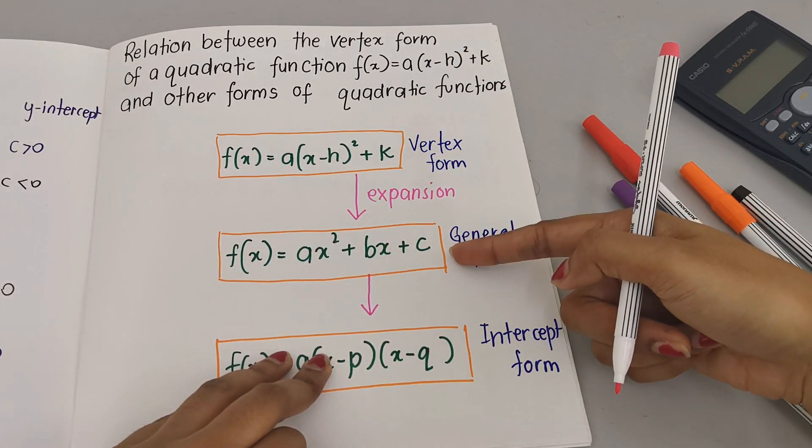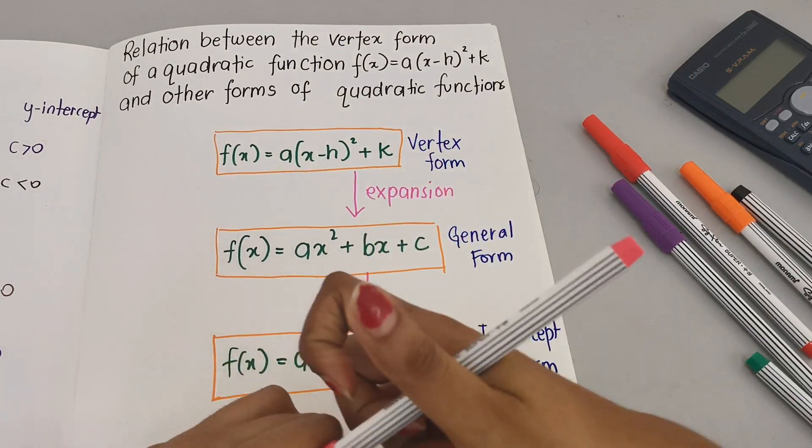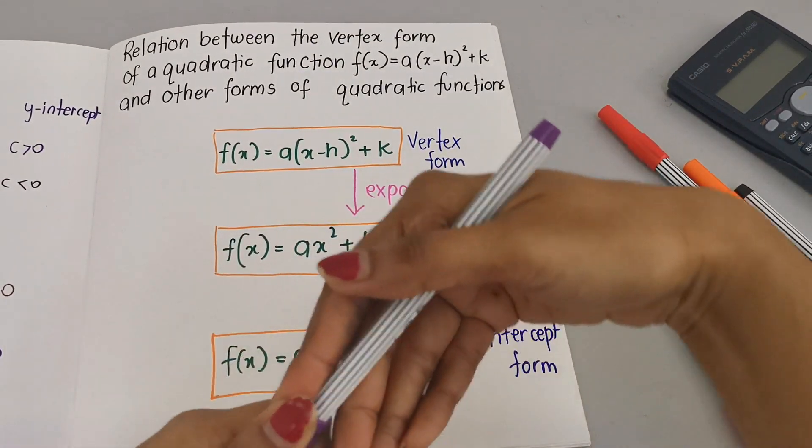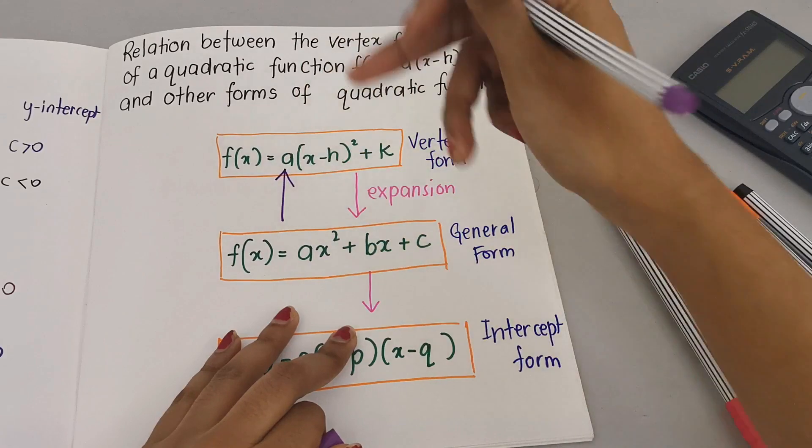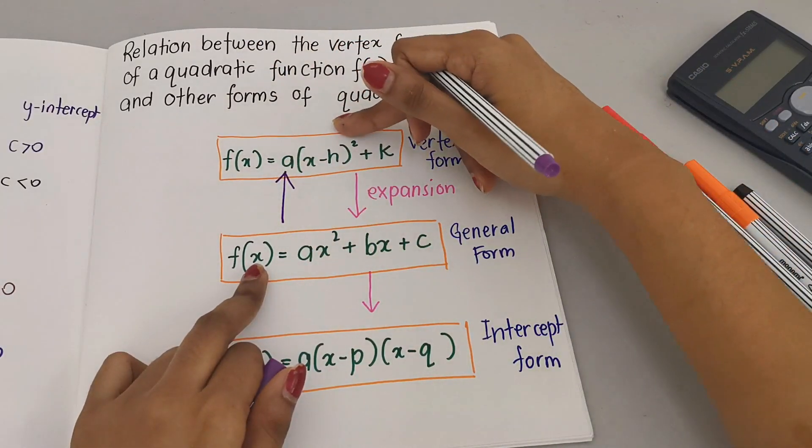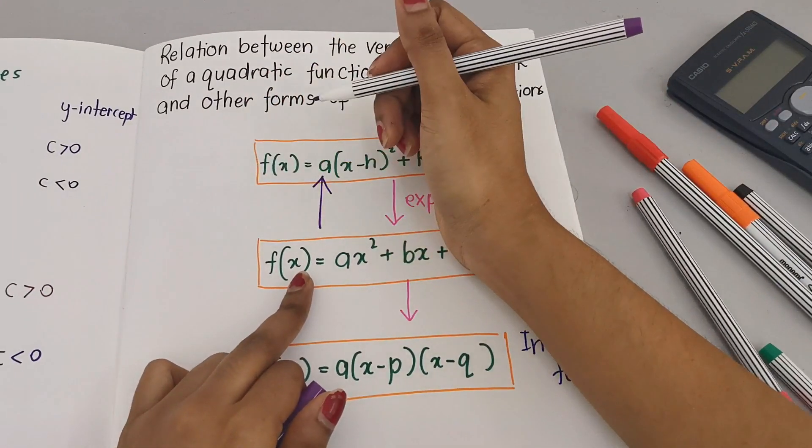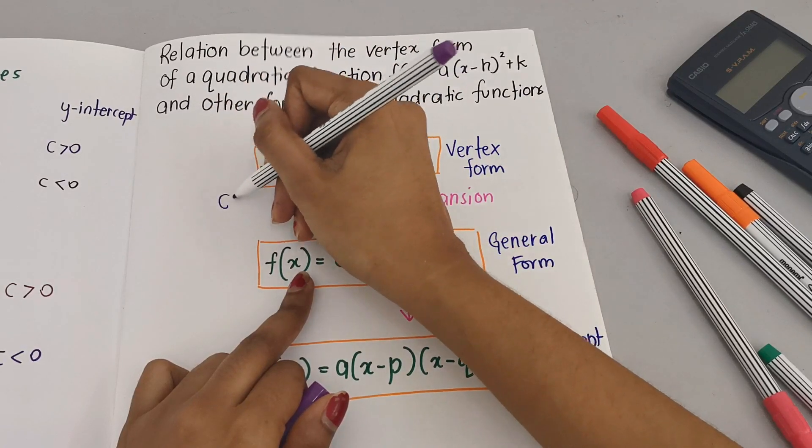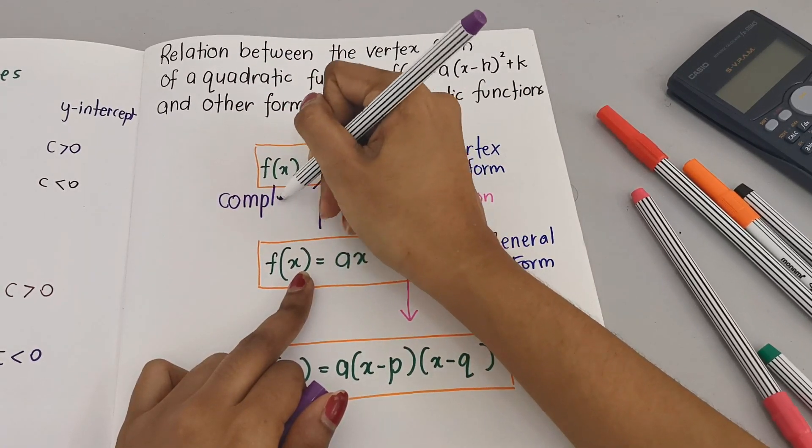We have general form, we want to go back to vertex form, we need to use completing the square. So this method - make sure you know how to do completing the square method.